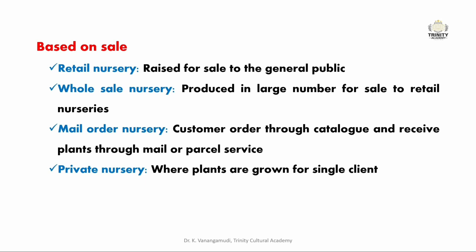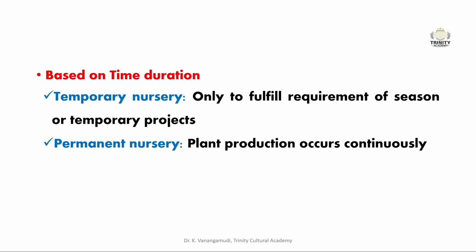Based on time duration, nurseries are classified into two types: temporary and permanent. Temporary nurseries are developed only to fulfill the requirements of a season or temporary projects, mostly production of seedlings of vegetables and flower crops. In permanent nurseries, production of plants occurs continuously and they have all permanent features like mother stock blocks, and work goes on continuously all year round.